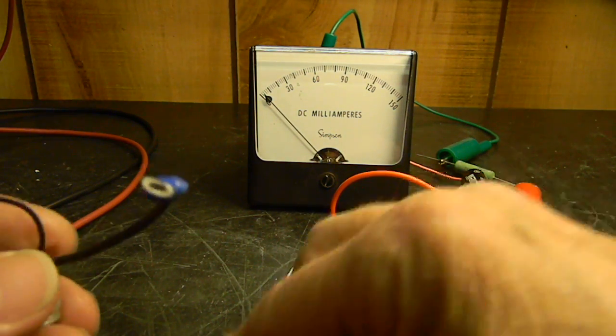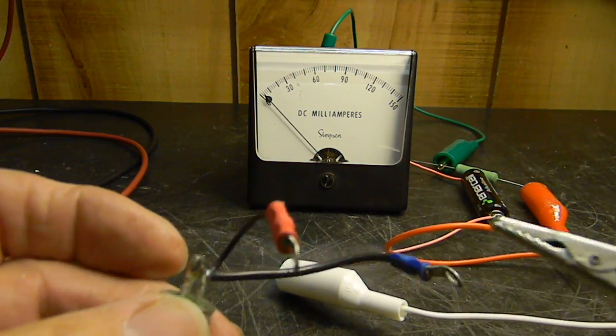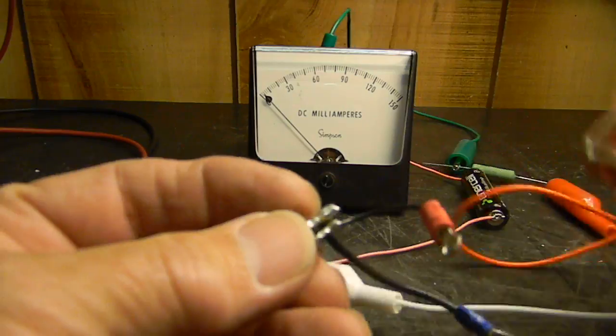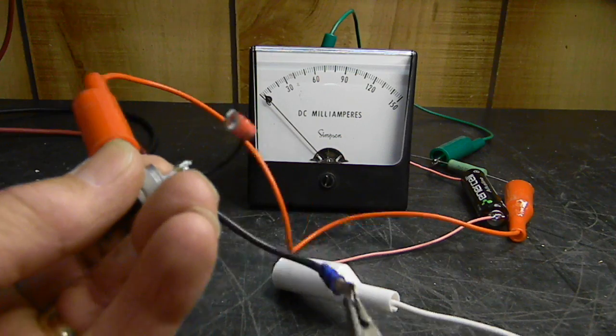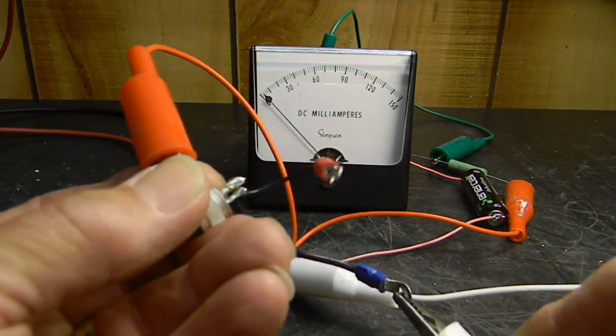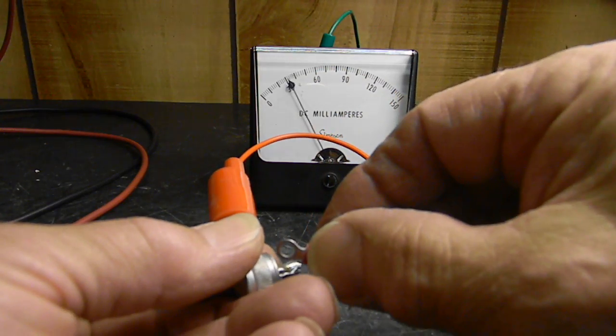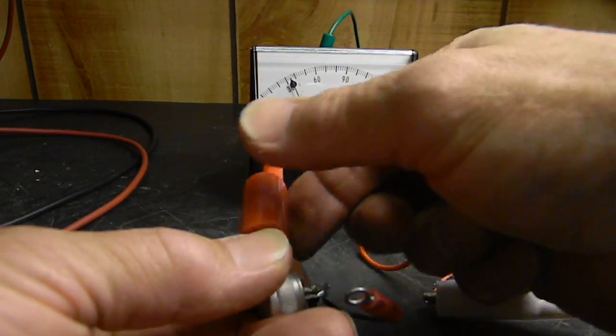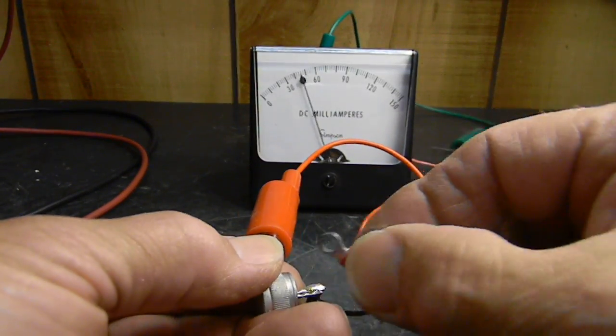Let's do it again with a different one. Here is the anode, cathode. Hold it to the anode. You can make yourself a sophisticated setup if you want to, but I'm just showing you the principles of it. Short it to the anode again. There it goes. See the meter turned on, it stayed on. Remove the current, the SCR shuts off. Trigger it again to the anode, it stays on. We've got another good SCR.